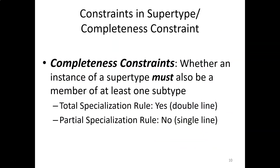When modeling supertype and subtype situations, you need to specify business rules in the ER diagram. The first is the completeness constraint, which states whether an instance of a supertype must also be a member of at least one subtype. If yes, it meets the total specialization rule, shown with a double line. If no, it meets the partial specialization rule, shown with a single line.